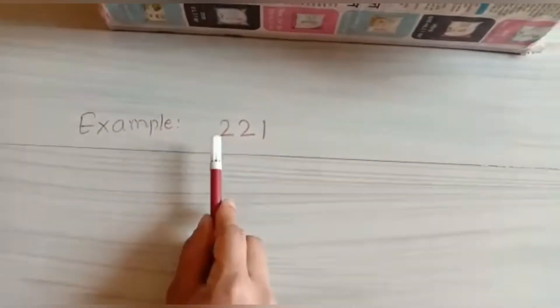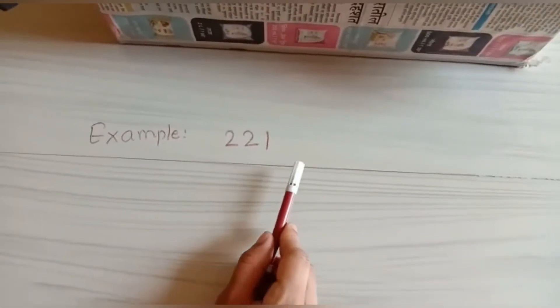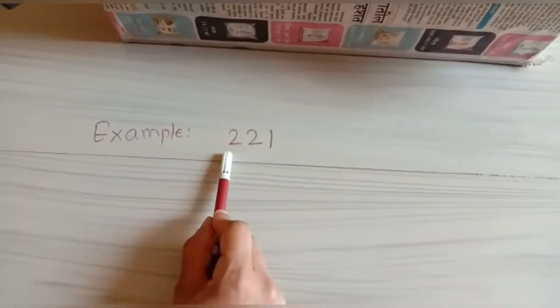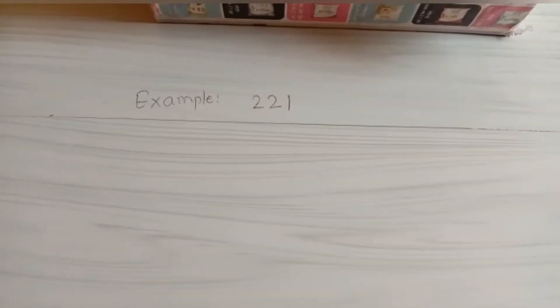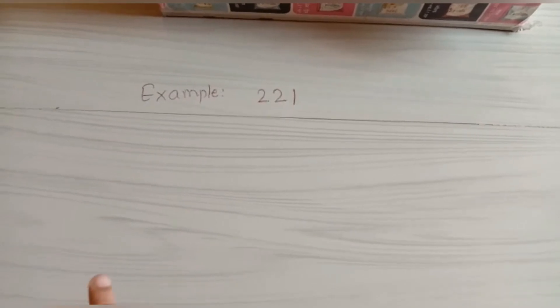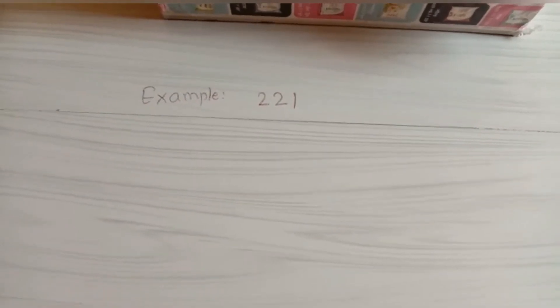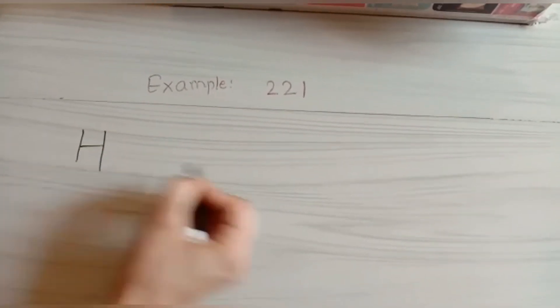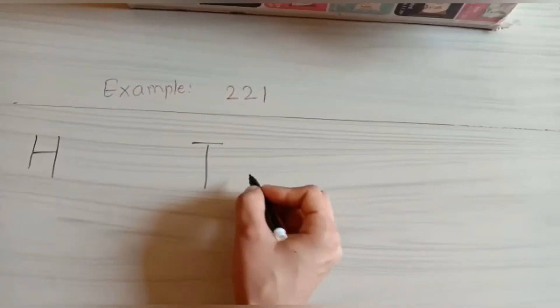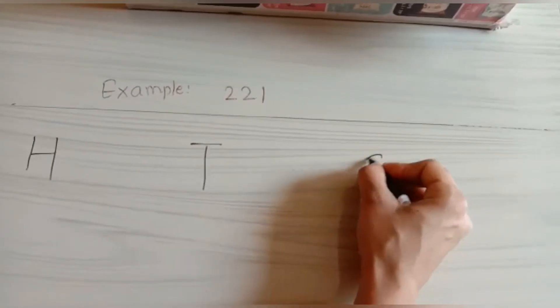Now let's see our next example. The number is 221, which means two hundred and twenty one. First, what are we going to do? We will place all three digits in their place value chart: hundreds, tens and ones.